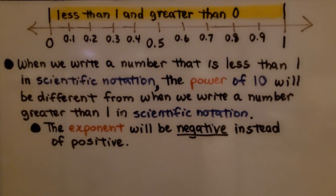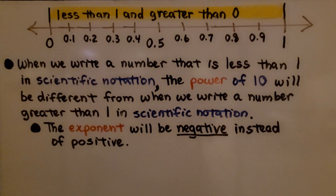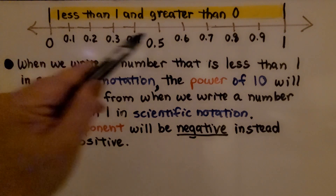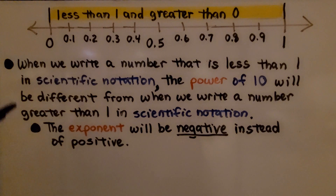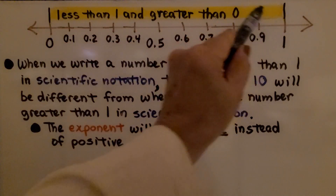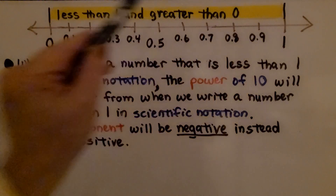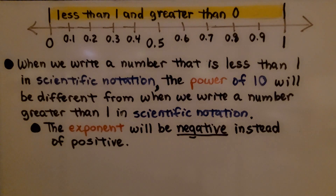When we write a number that is less than 1 in scientific notation, the power of 10 will be different from when we write a number greater than 1. The exponent will be negative instead of positive. When the number is between 0 and 1 — less than 1 and greater than 0, in this yellow area — the exponent will be negative when we write the number in scientific notation.